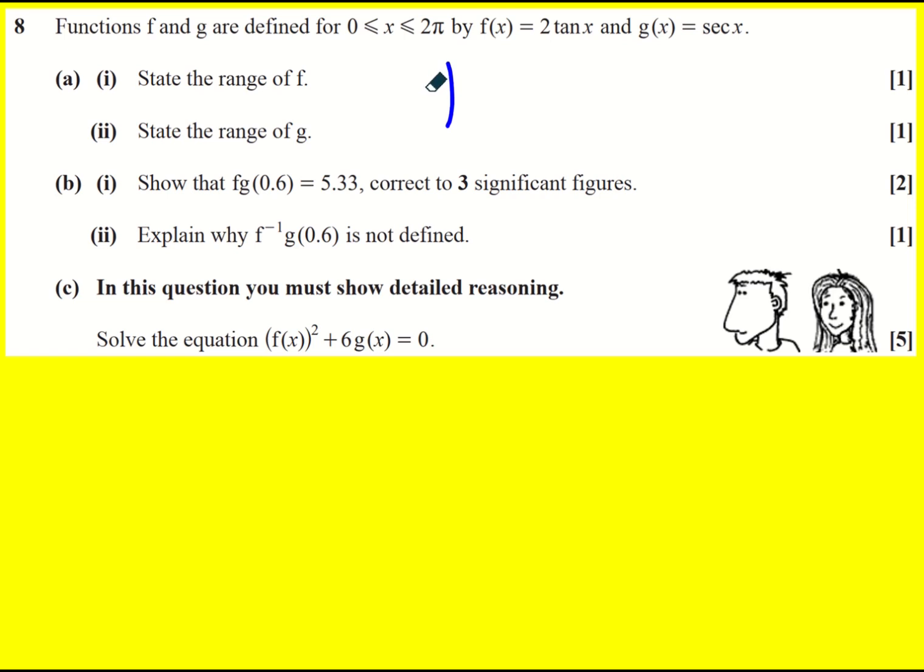So tan(x) first of all, just going to draw a little sketch of it. Remember it's between zero and 2π in radians, so tan has an asymptote at 90 which is π/2. It looks a bit like that, and that's 3π/2, and it's going to look a bit like that. So that's tan between zero and 2π. We're going to get the range as all possible values of x because it goes from minus infinity to plus infinity.